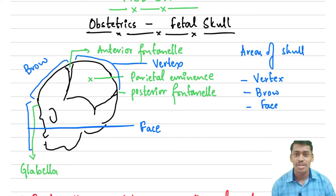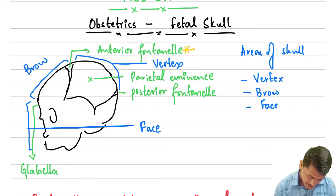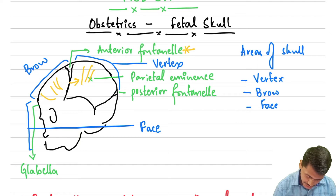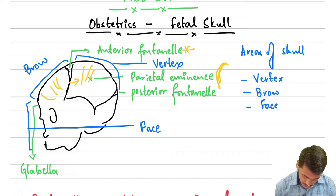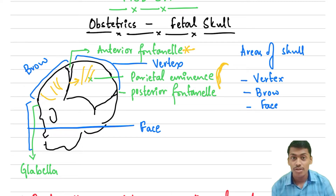Welcome. In this video we are going to look at the obstetric part of the fetal skull. The anterior fontanel is formed by the coronal suture, the frontal bone, and the two parietal bones. The anterior fontanel is formed by the coronal suture and the sagittal suture connecting it. A fontanel is nothing but a wide gap in the suture line. The anterior fontanel closes up to 18 months.